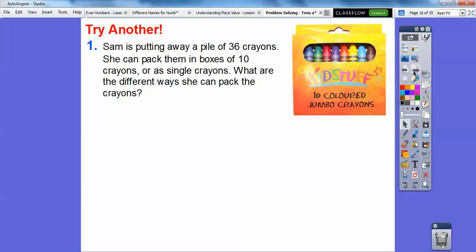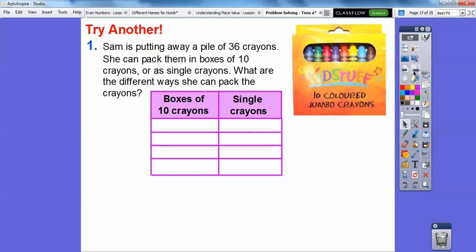Alright, so here's another one. So Sam is putting away a pile of 36 crayons. She can pack them in boxes of 10 crayons or single crayons. What are the different ways she can pack the crayons? So let's go ahead and build this chart right here. So boxes of 10 crayons. So since there's 36 crayons, she can do boxes of 30s, 20s, 10s, and then 0s. So let's go ahead and put these down. 3, 2, 1, 0. So the boxes of 10s right there.